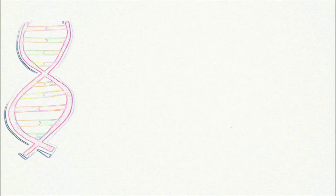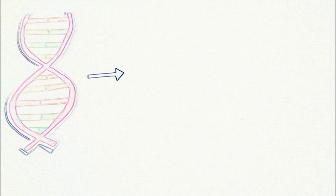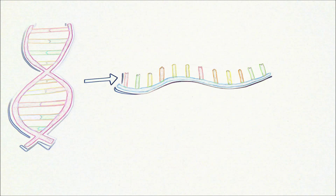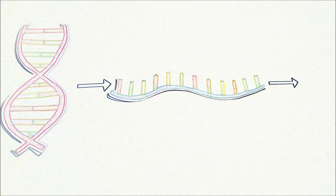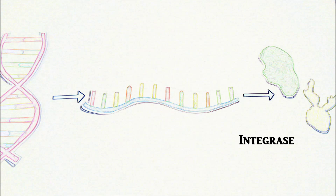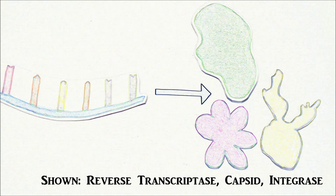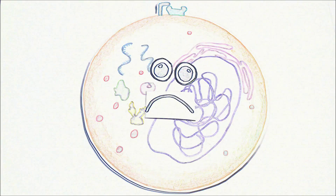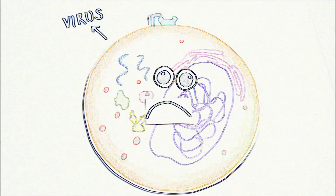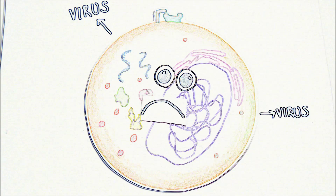This DNA is then transcribed and translated in order to make building blocks for the new virus using the helper T-cell's own metabolic machinery. After all, the goal of the virus is to make the target cell produce more of the virus.